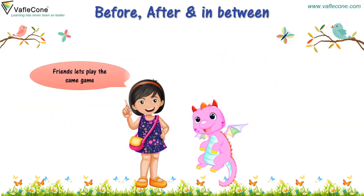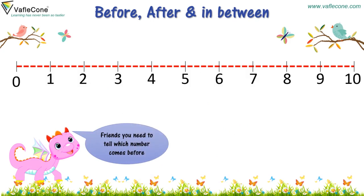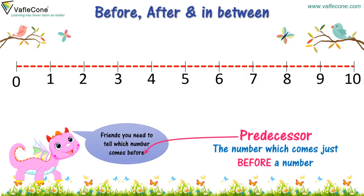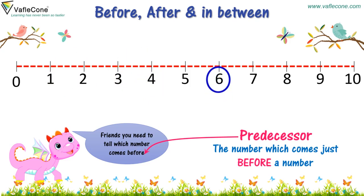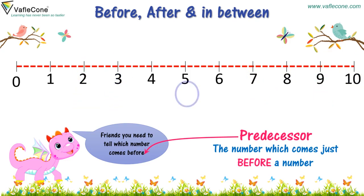Friends, let's play the same game. You need to tell which number comes before. Four, two. One, four. Three, six. Five, eight. Seven, ten. Nine, three. Two, five. Four, seven. Six, nine. Eight.